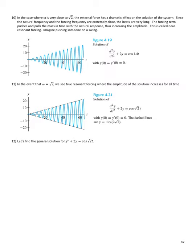When the natural frequency and the forcing frequency are extremely close, the beats are very long. The forcing term is pushing and pulling the mass in time with the natural response, so the amplitude keeps getting bigger and bigger, like when you push someone on a swing in time with its natural rhythm and it goes higher and higher. When ω equals √2 exactly, we see true resonant forcing where the amplitude of the solution increases for all time.